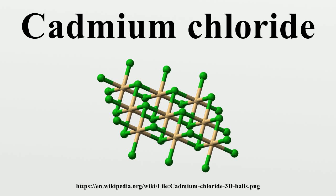The crystal structure of cadmium chloride is composed of two-dimensional layers of ions, and is a reference for describing other crystal structures. Cadmium chloride forms crystals with rhombohedral symmetry.